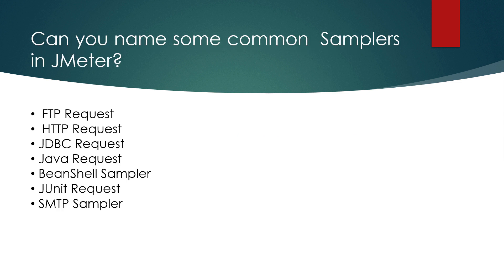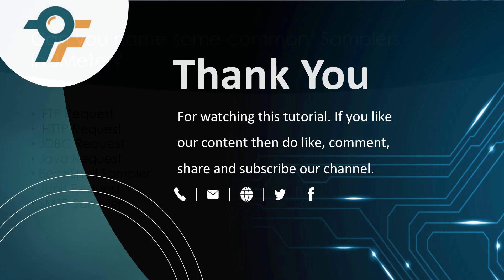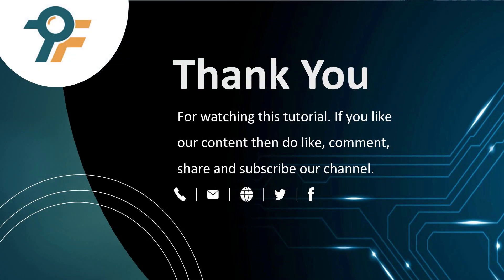The next question is: can you name some common samplers in JMeter? The common samplers are FTP Request, HTTP Request, JDBC Request, Java Request, BeanShell Sampler, JUnit Request, and MQTT Sampler. There are many others available in JMeter, but these are the most common ones.